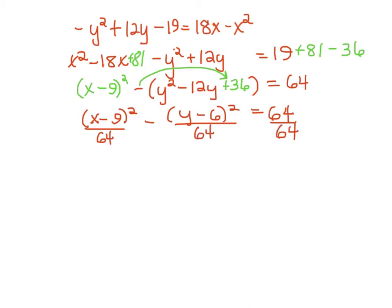But we know that hyperbolas need to be set equal to 1 as well, so I'm going to divide everything by 64. And you'll say, well Mrs. Irwin, this kind of looks like a circle then, but the main difference is that I am subtracting. So I now have x minus 9 squared over 64 minus y minus 6 squared over 64 equals 1.